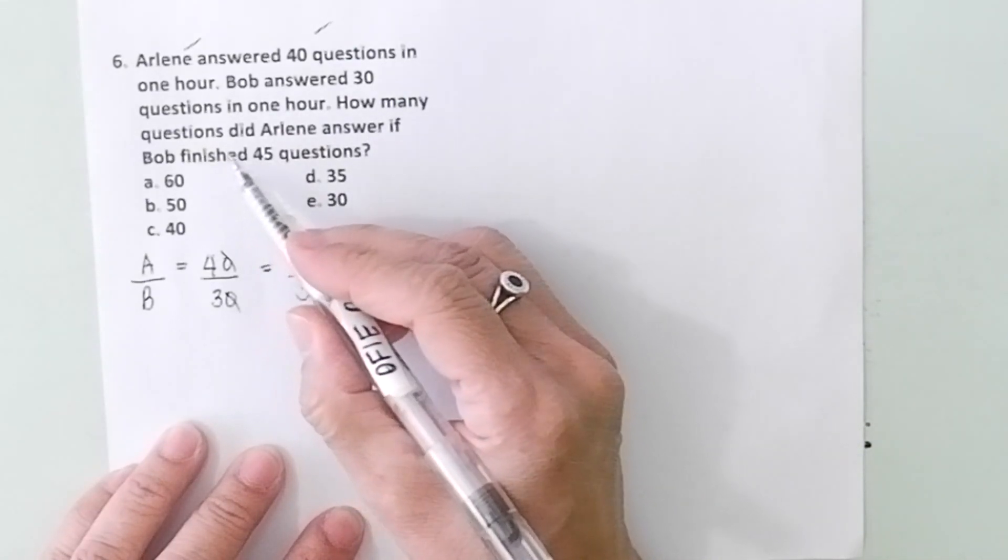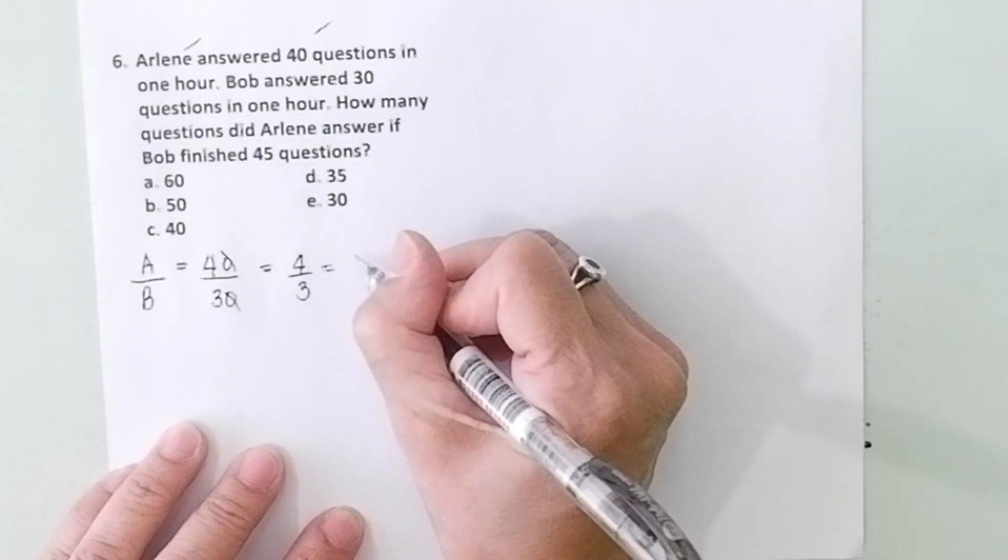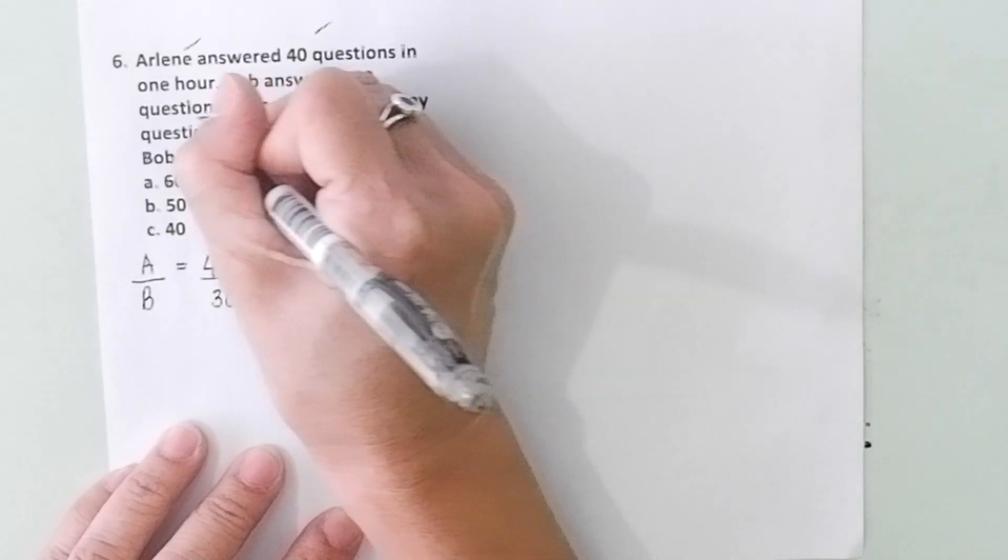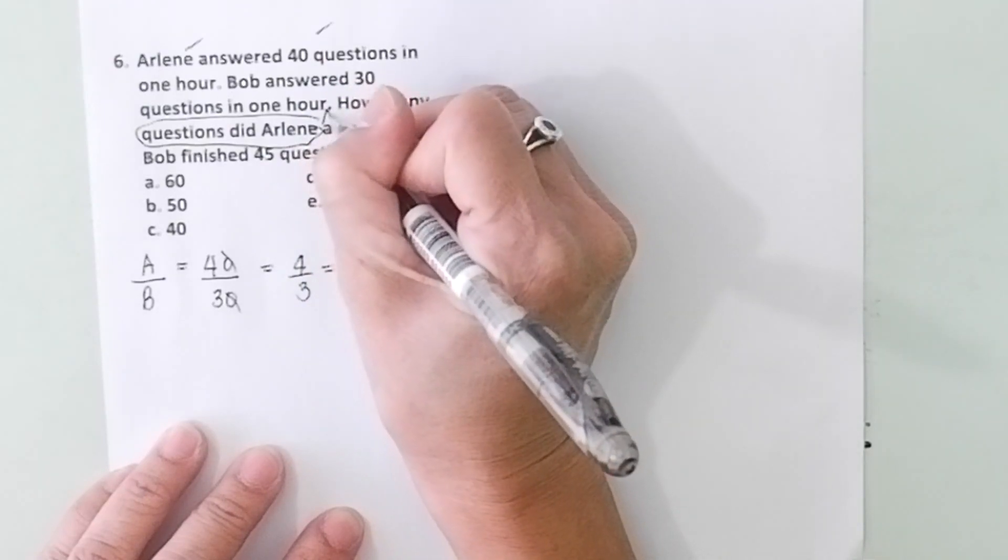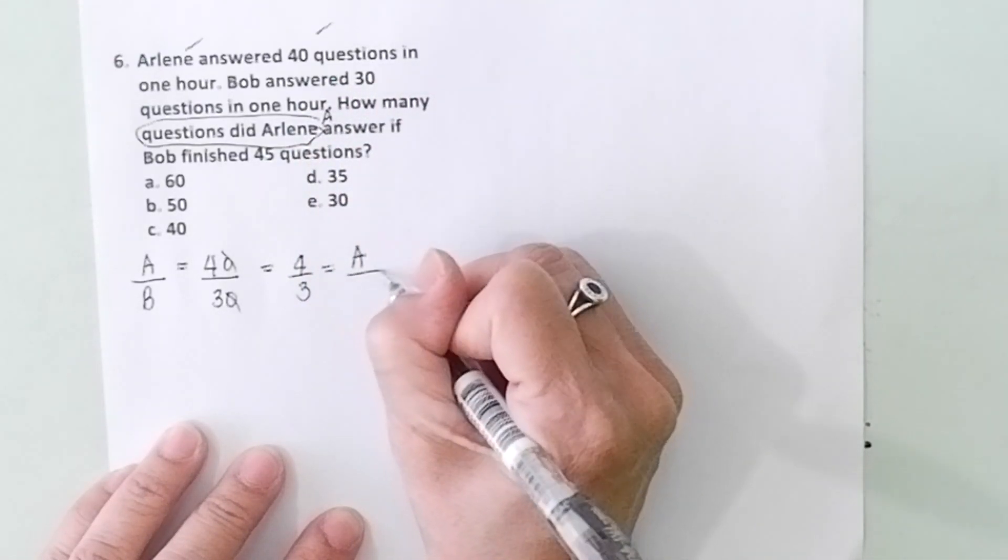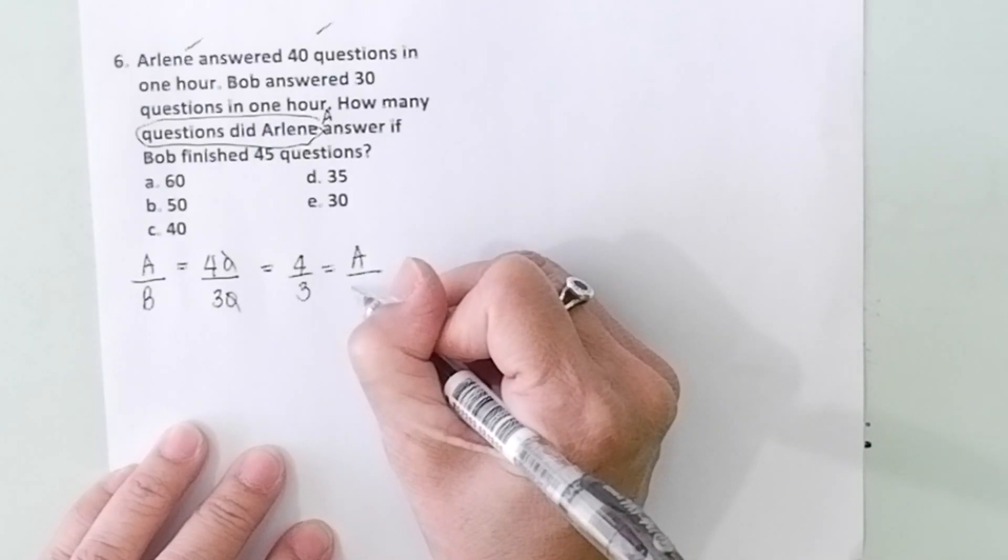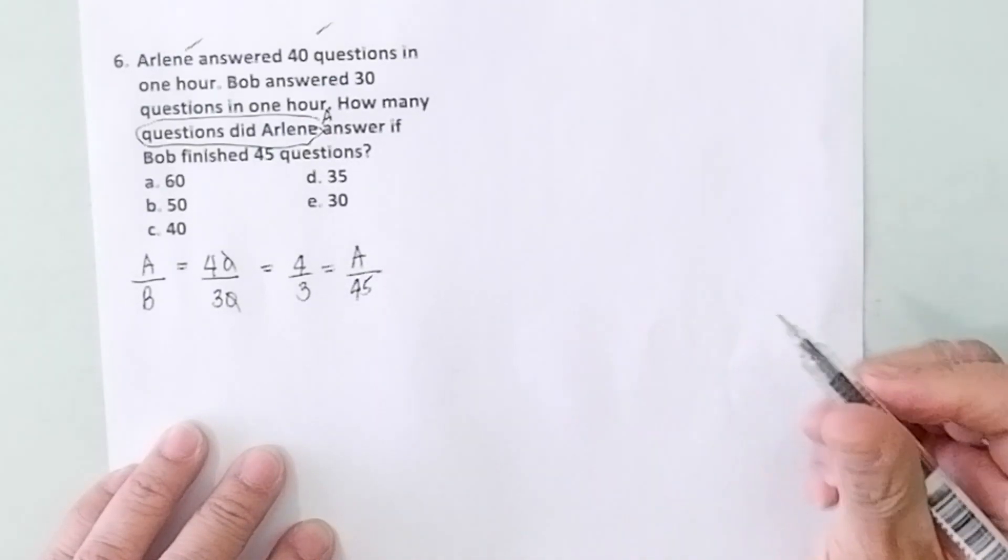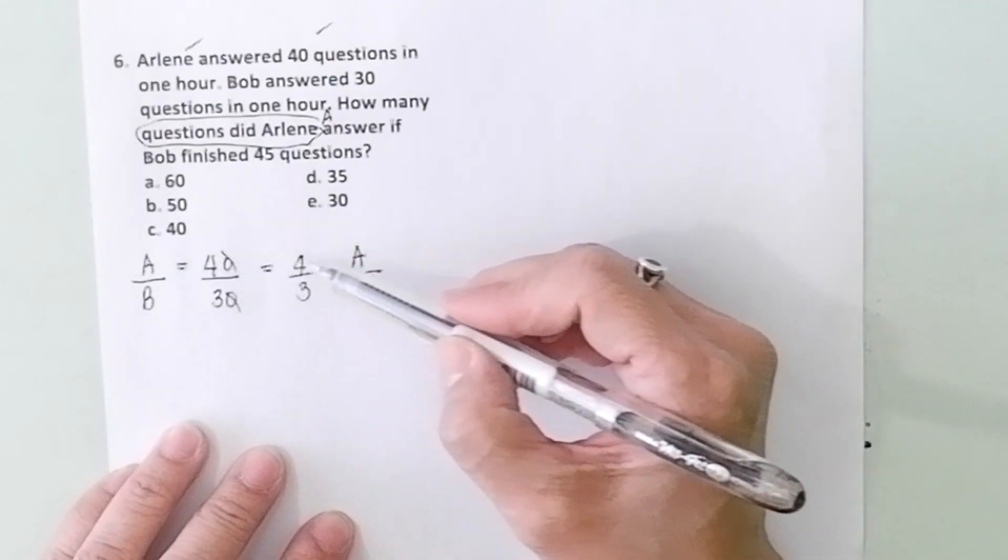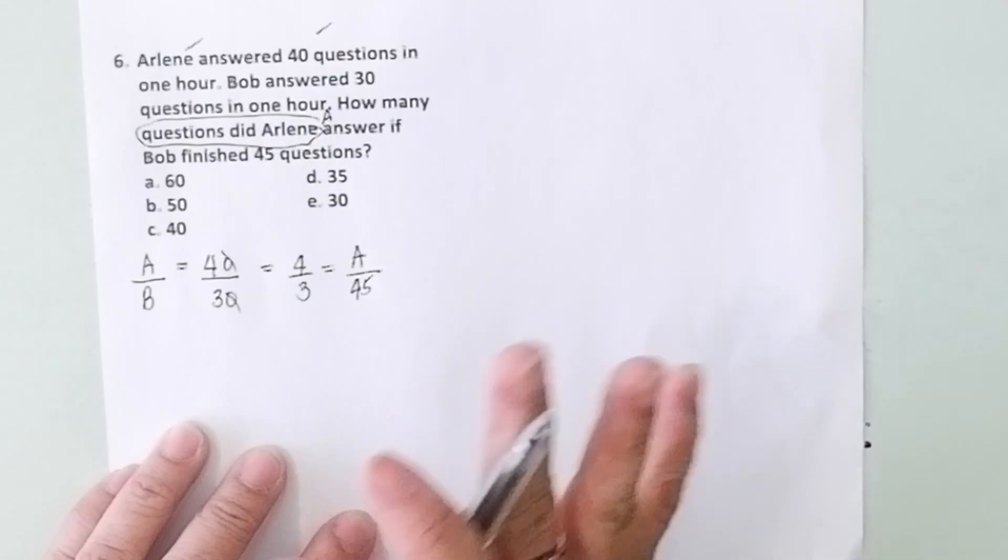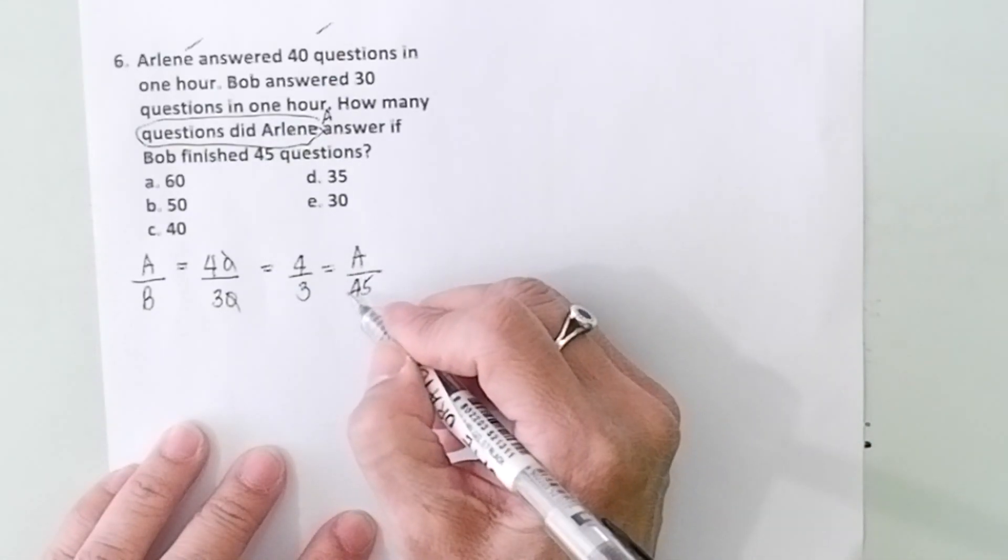How many questions did Arlene answer? So Arlene is for A. We let the questions that Arlene answered be A. If Bob answered, finished 45 questions. Did you get that? The numerators are for Arlene, the denominators are for Bob.